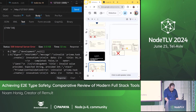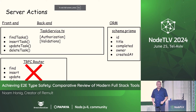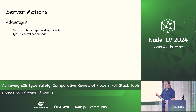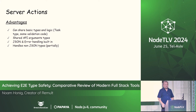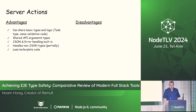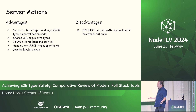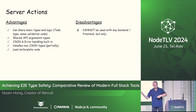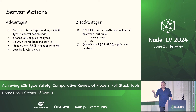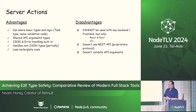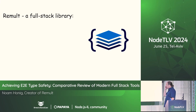Back to our presentation. Advantages of server actions: we can share basic types and API arguments, JSON and error handling are built in, it handles non-JSON types partially (dates work, but enums and classes are more complex), and a lot less boilerplate code. Disadvantages: it's only relevant when using React and Next — if using Angular you'd need Analog, Vue has Nuxt, Svelte has SvelteKit — and it's tightly coupled between UI and backend. You can't use it with Express, Fastify, or Nest. It doesn't use standard REST API and doesn't validate API arguments.